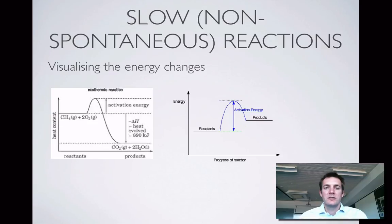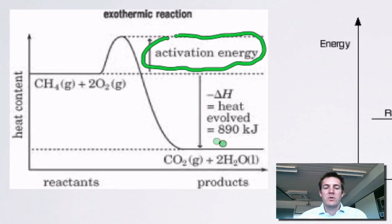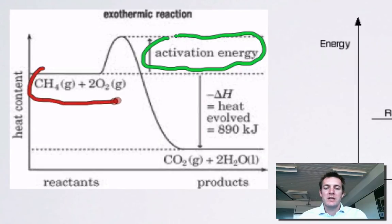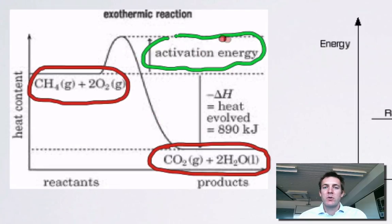Now let's look at some slow or non-spontaneous reactions. Here the activation energy must be quite large. This is actually the energy level diagram for methane burning in oxygen to produce carbon dioxide and water — an exothermic change that releases a lot of heat. Luckily for us, because we can turn the gas tap on without it going bang straight away, this reaction won't start until you provide heat energy, usually in the form of a spark or match. So this activation energy must be quite large, and for large activation energies, reactions won't be fast or spontaneous — we need so much energy to get them started.